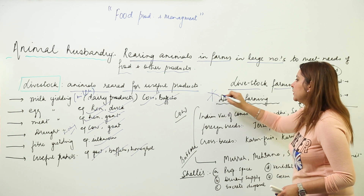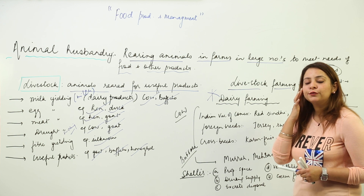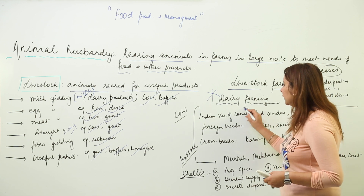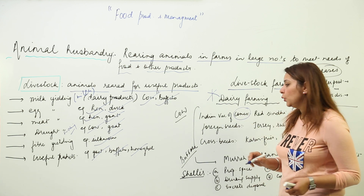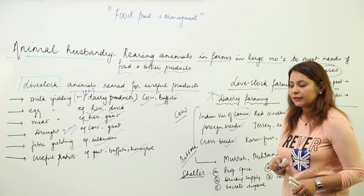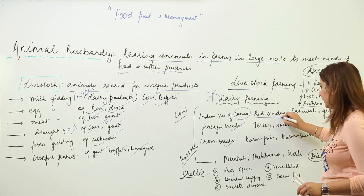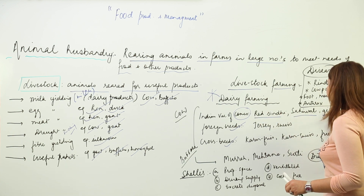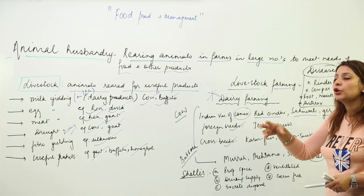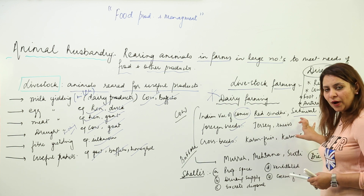Starting with livestock farming, our first topic is dairy farming. In dairy farming we need to rear animals useful for dairy products, so we have certain varieties. We have Indian varieties of cows — the most popular are Red Sindhi, Sahiwal, and Gir. Remember these names because you will get a question asking you to name indigenous or Indian varieties of cow.